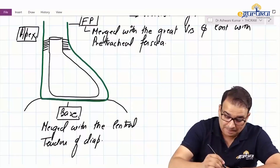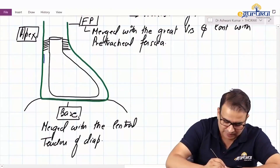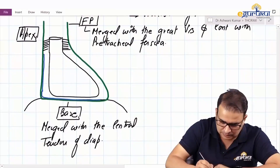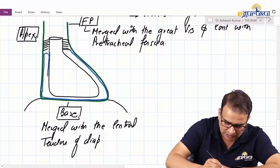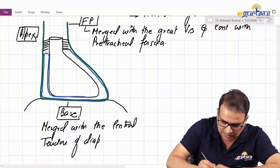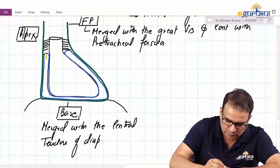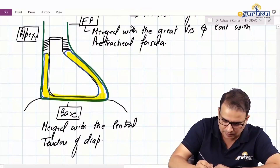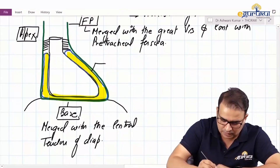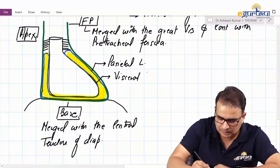Now when it comes to the serous pericardium, we said we have two layers. One is the parietal layer, which is adherent to the fibrous pericardium. Then we have the visceral layer, which is adherent to the heart, covering the heart and its coronary vessels closely. The space in between will be the pericardial space, with a thin film of fluid acting as a lubricant.